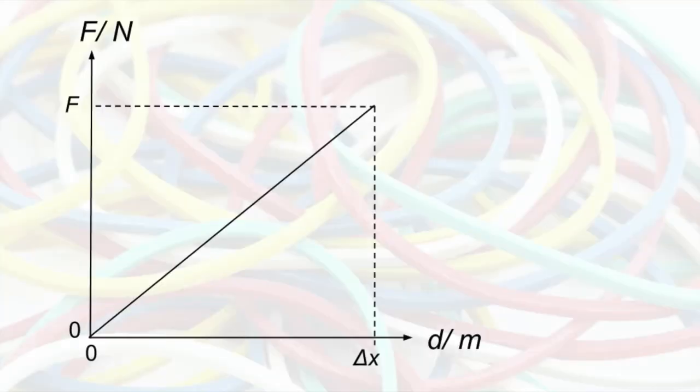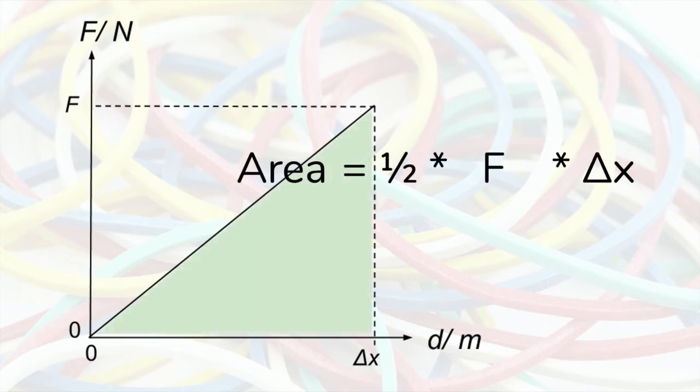Here is a force which increases linearly with the distance it moves, so the shape is a triangle. And we measure the area under a triangle by calculating half times the height times the base. In this case, the height is the force F and the base is the extension delta x.